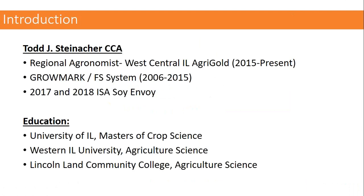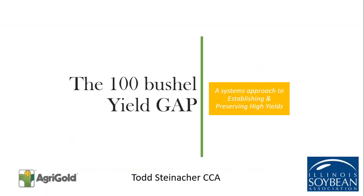Good morning. I appreciate the opportunity to speak this morning on growing higher yielding soybeans and understanding the challenges that go into it. Building this 100-bushel yield gap is really about developing a systems approach. There's not one silver bullet. It's all about establishing a high yield potential, and if the environment is there, it can preserve the top-end yield.